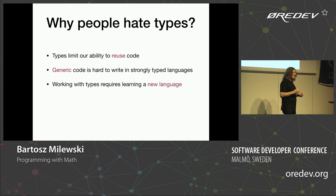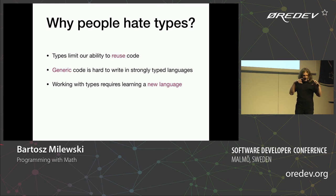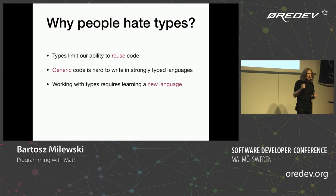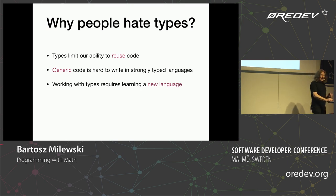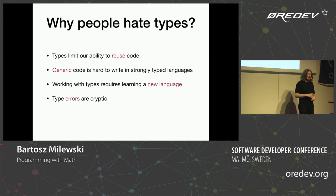In C++, for instance — I used to be a C++ programmer — it was really challenging because you had to learn this new language with the angle bracket syntax. It's a completely different, very complicated language, and you have to be like a real guru to program in it. And then when you make a mistake, the type errors are so cryptic. Anyone who's seen type errors in template code in C++ will know.